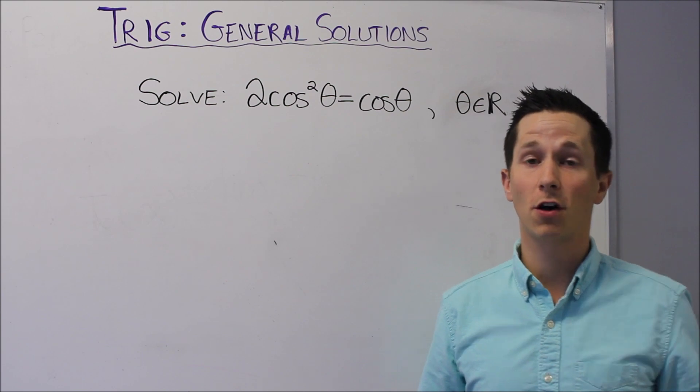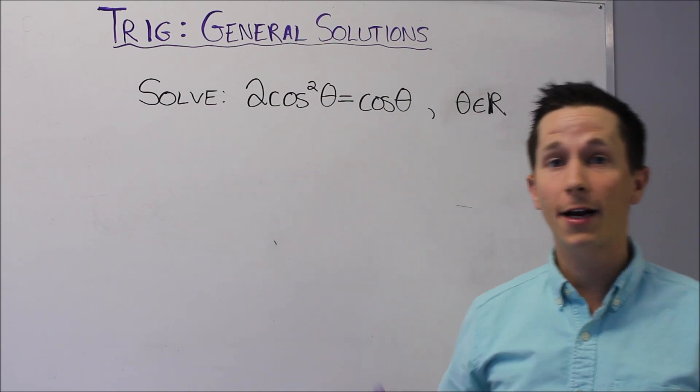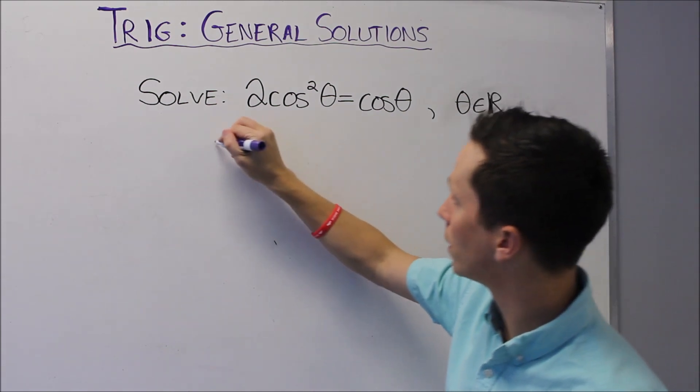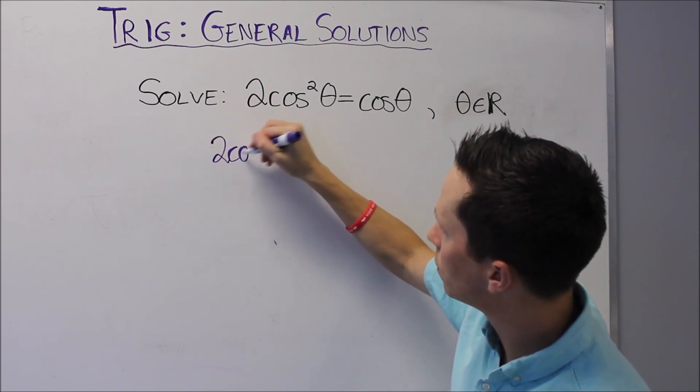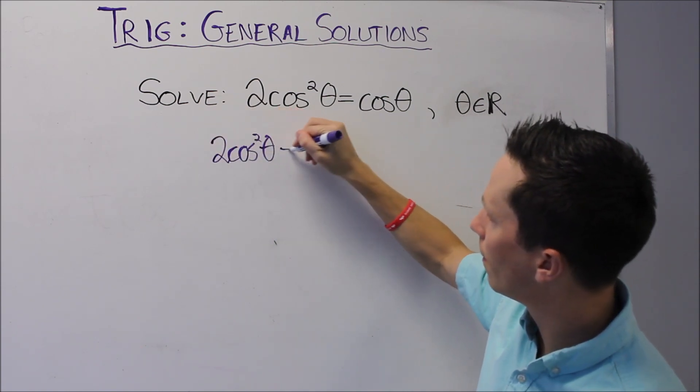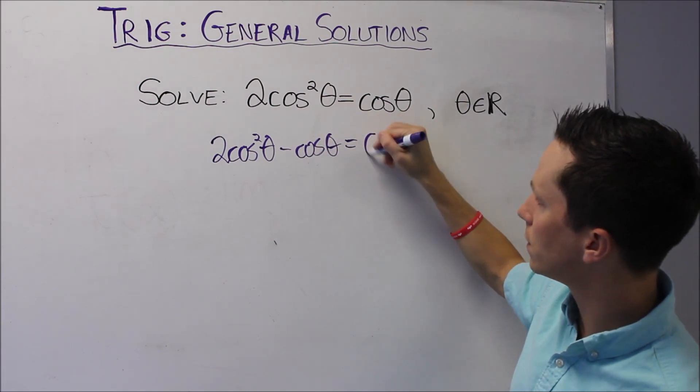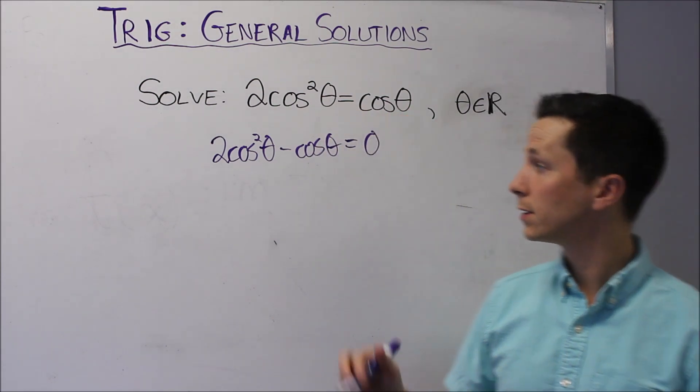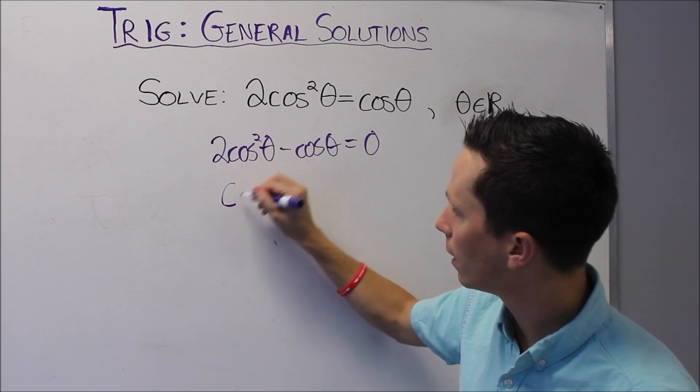First things first, we have to solve the trig equation, which we know how to do. It's a quadratic in cos theta, so I'm going to get everything to one side. So 2 cos squared theta minus cos theta equals 0. We like quadratics equal to 0.